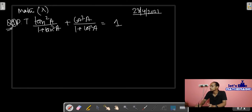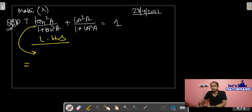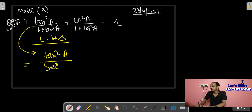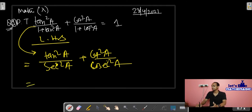We have the first problem in our class. In the LHS we have this expression, and we have to reduce the RHS to one. In the LHS part, we write LHS and copy the same part. From the next step, tan²A remains as is, but one plus tan² means we can write sec²A. Similarly, cos²A remains as is, but one plus cos² will be cosec²A. So we are already very close to the result.